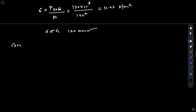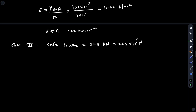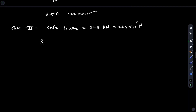Case 2: safe load is 275 kN = 275 × 10³ N. Again, crippling load P_c = factor of safety × P_safe = 2.5 × 275 × 10³ = 687.5 × 10³ N.